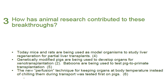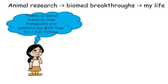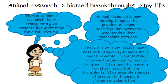Next, I need to figure out what connects these three ideas — what do I really want people to know that all three relate to? That will be my controlling idea. I know it involves something about animal research, something about biomedical breakthroughs, and something about my life. Looking at those bullet points, the first thing I want people to know is that thanks to animal research, liver transplants give patients like my husband Matt the hope for a full lifetime. Another connection is that all three breakthroughs are helping address the problem of organ scarcity — not everyone who needs a liver transplant gets one, and each breakthrough is helping create more organs for transplant.